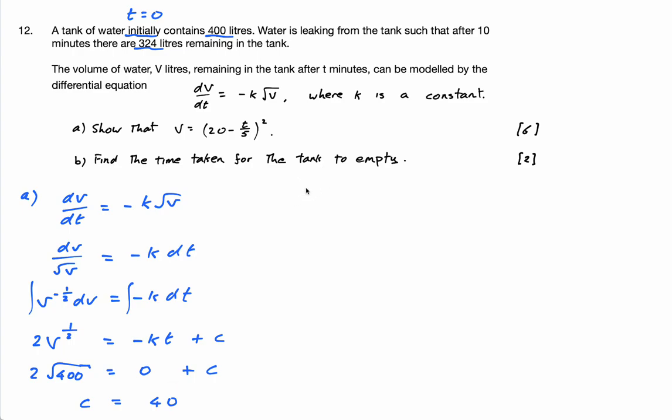But obviously I'm not finished. I need to put my C back in here. So I have 2 times root V. That's this equation here. 2 times root V is equal to minus KT plus 40. Now I can sub in my 10 and my 324. So 2 times the square root of 324. I hope that's a nice number. Is equal to T is 10.